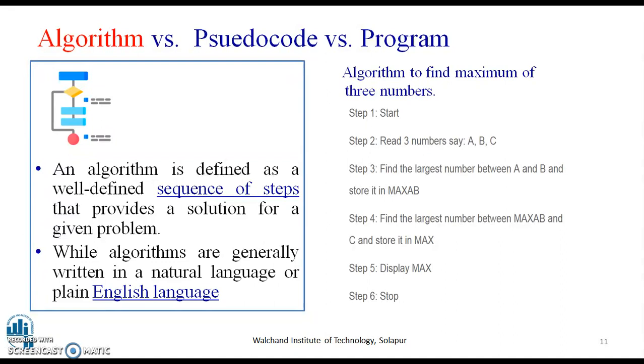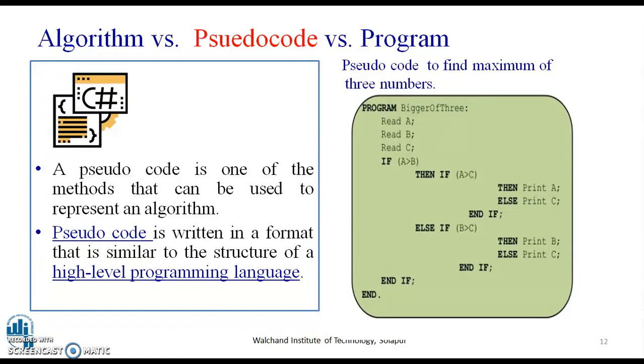Now, here we show an example where the algorithm to find maximum of three numbers is given. Here it is used in simple English language. You can see over here. It is basically a sequence of steps that provides a solution for the given problem that is finding the maximum of three numbers. There are six steps and simply written in English language. Now, then what is the difference with pseudocode?